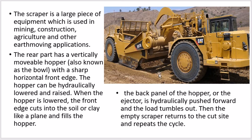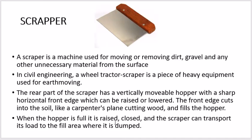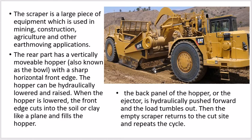The blade moves as per your setting or the depth of land you want to cut. When you want to remove material from the surface, the blade goes down. The front edge cuts into the soil like a carpenter's plane cutting wood and fills the hopper. When the hopper is full, it is raised and closed, and the scraper can transport the material to any other area.